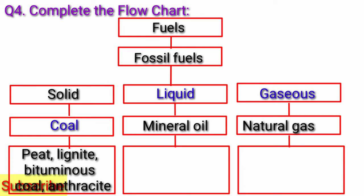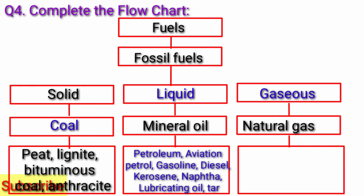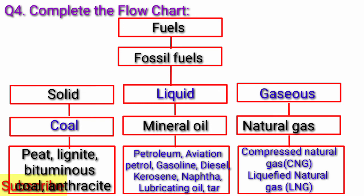Question 4) Complete the flow chart — Fuels: Fossil Fuels — Solid: coal (pit lignite, bituminous, anthracite); Liquid: mineral oil/petroleum (aviation petrol, gasoline, diesel, kerosene, naphtha, lubricating oil, tar); Gaseous: natural gas (compressed natural gas CNG, liquefied natural gas LNG).